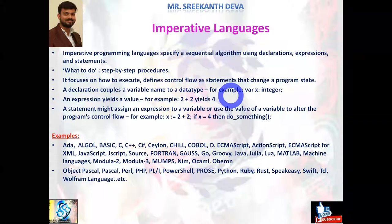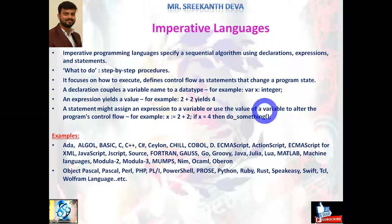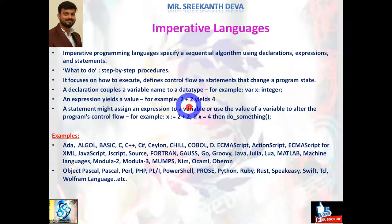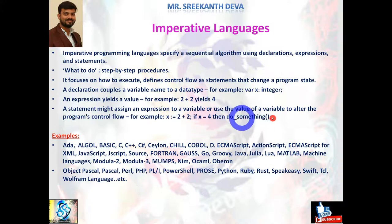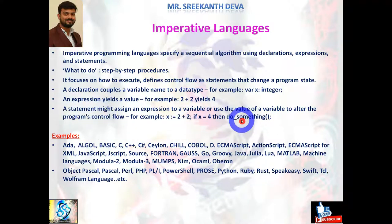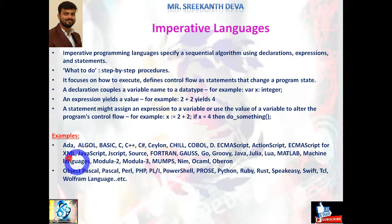A statement is like doing something or performing some action. A statement might assign an expression to a variable or use the value of a variable to alter the program's control flow — that comes under statements. These declarations, expressions, and statements all come under what imperative languages are. Several examples of imperative languages include ALGOL, BASIC, and others. C is an imperative language.